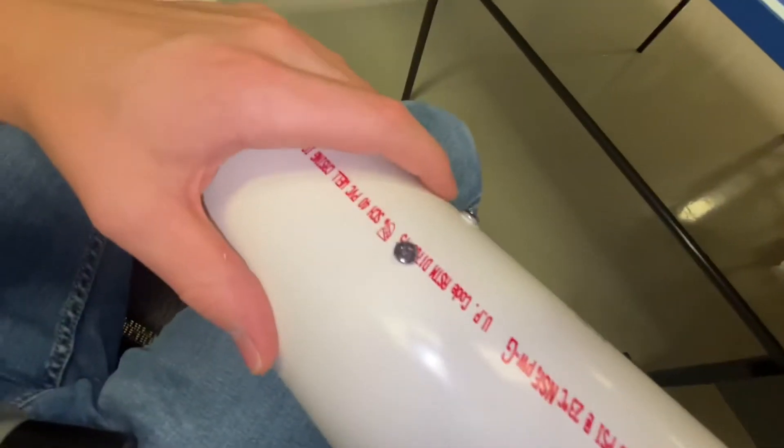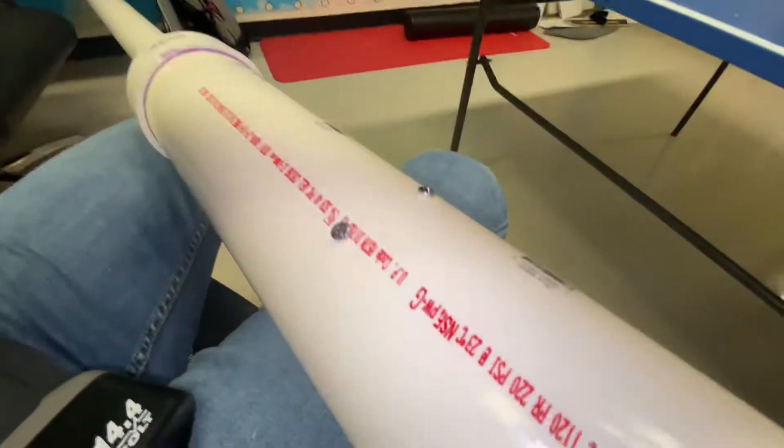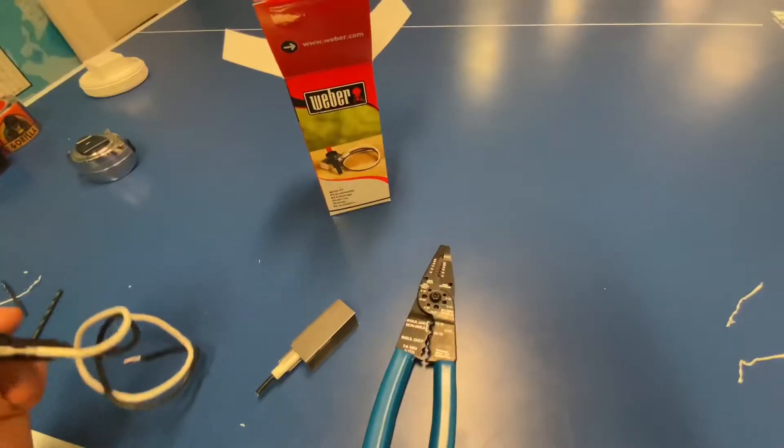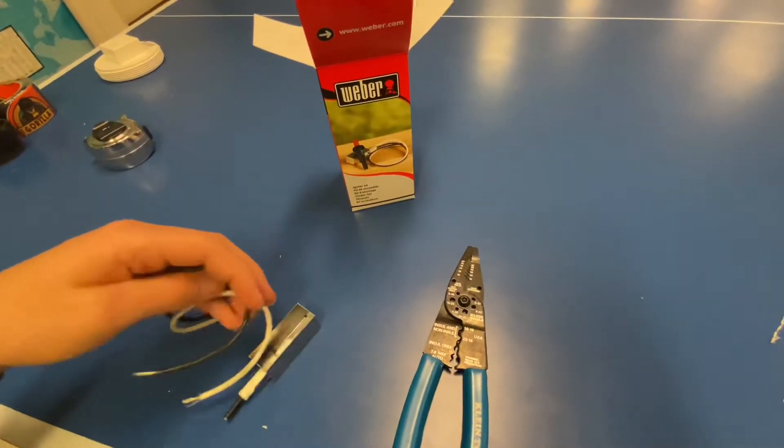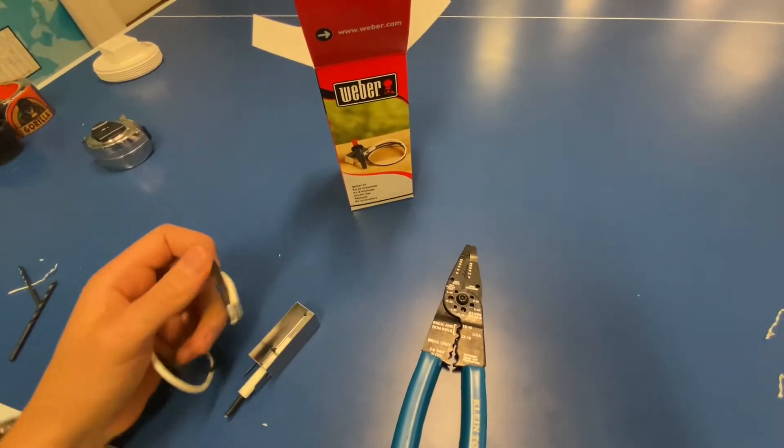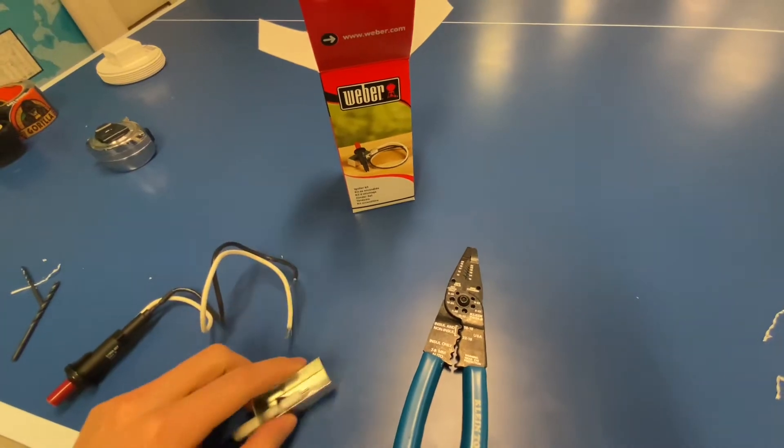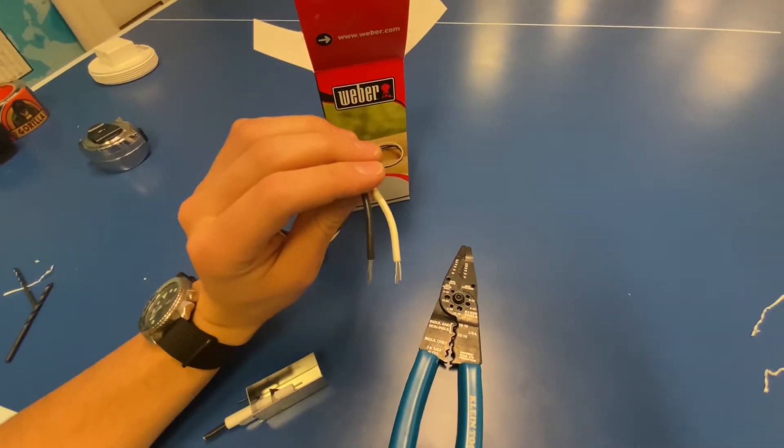Go ahead and back them out just a little bit so that we can put the leads on. Now with the igniter, go ahead and cut off both wires from this piece and then strip a little bit off.